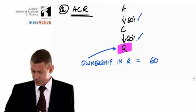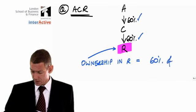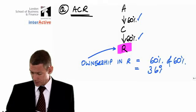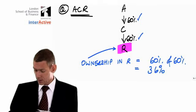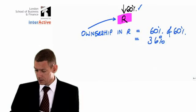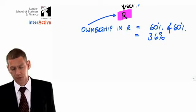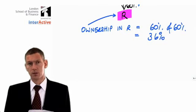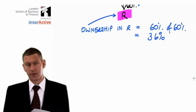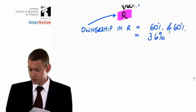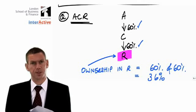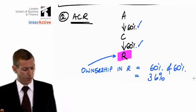That bit's quite easy. But hang on - is R a subsidiary or associate? It'll be a subsidiary if we have control. Do we have control of R? When I say we, of course, I mean A, the parent.